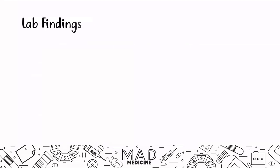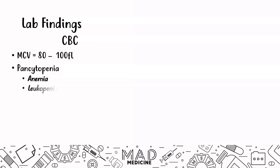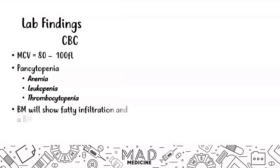For lab findings in aplastic anemia, patients will have an MCV of 80 to 100 since this is a normocytic anemia. They will also have a hypocellular bone marrow with anemia, leukopenia, and thrombocytopenia — a full pancytopenia. On bone marrow biopsy, you will see fatty infiltration, a hypocellular bone marrow, and a dry bone marrow tap because it is not functioning properly.